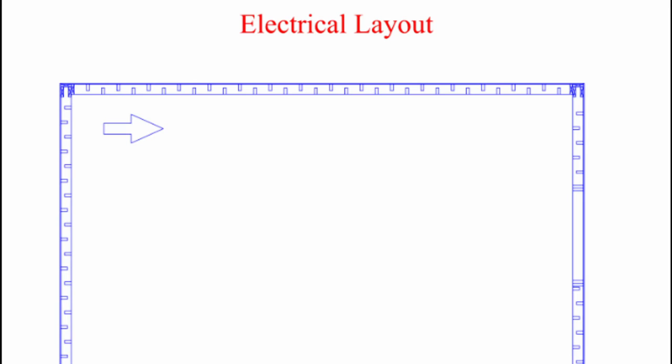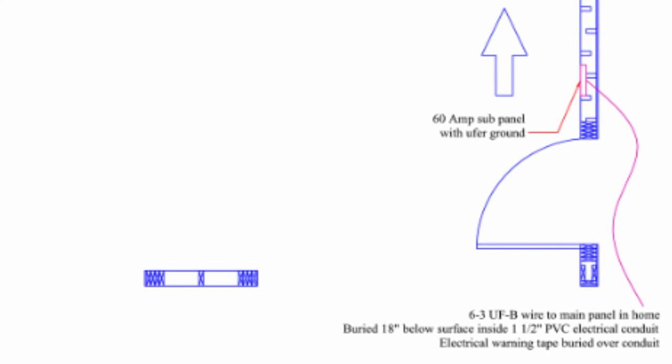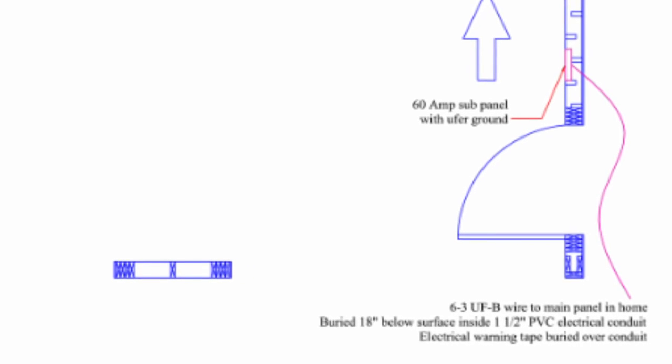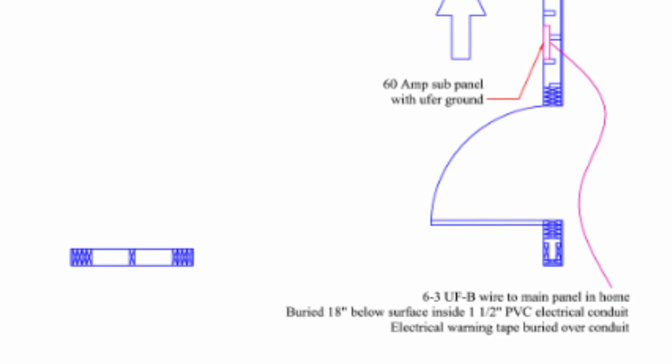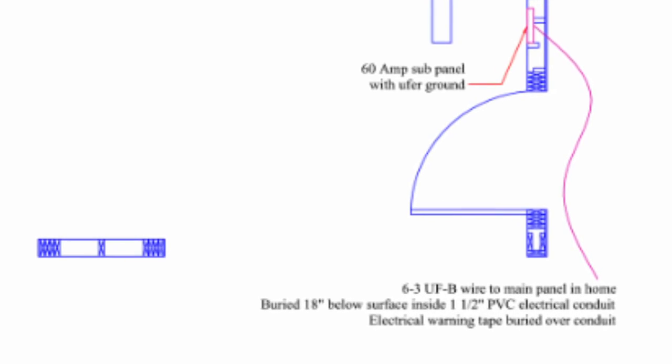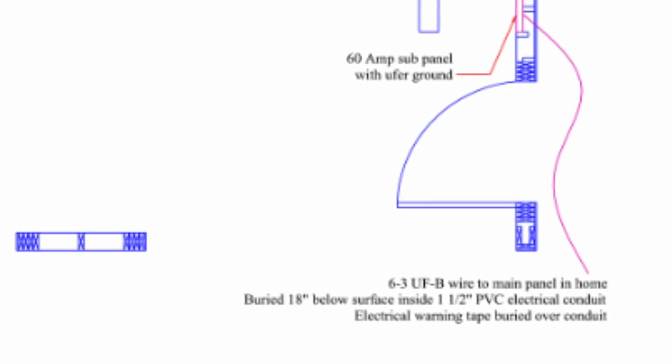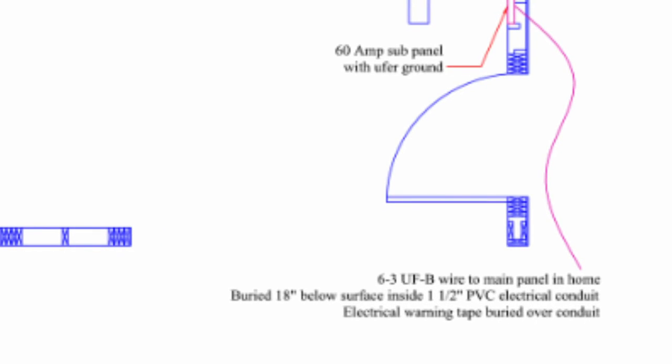So on the electrical you can see the 60 amp sub panel. The UFA ground is coming up through the concrete to connect to that. And I also put some notes about the electrical requirements for the wiring and how to bury it. I did use a UF-B wire. It can be buried directly underground without any protection. However, if I'm going to bury it only 18 inches in the ground then I should be using a PVC pipe to protect it in case somebody is digging. And then of course I will use electrical warning tape that is buried over the conduit so as somebody is digging they will run into the red tape warning them of an electrical wire a little down below.